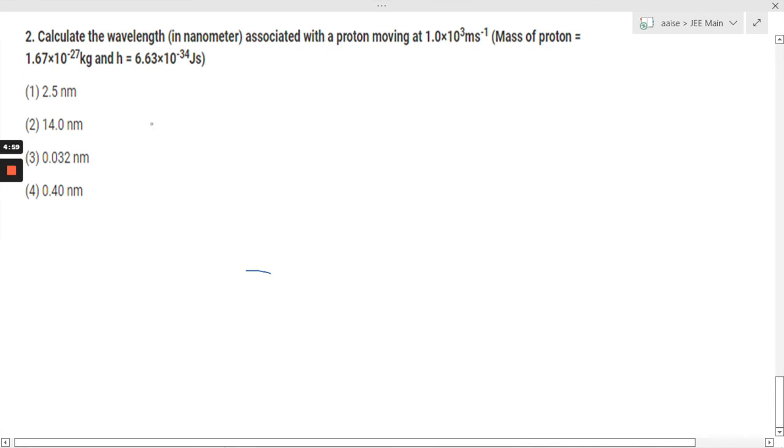Hello everyone, today we are solving a question based on de Broglie wavelength. In this question, it is given that the velocity of the proton is 1.0 × 10³ meters per second.